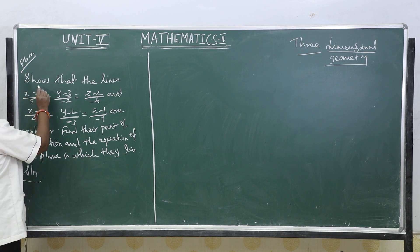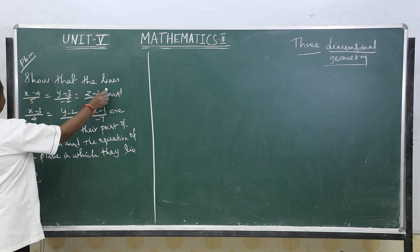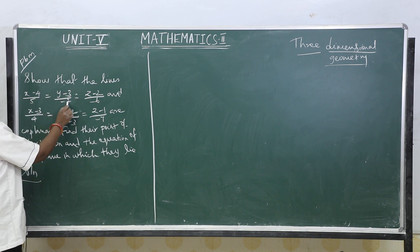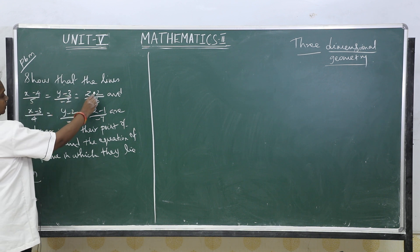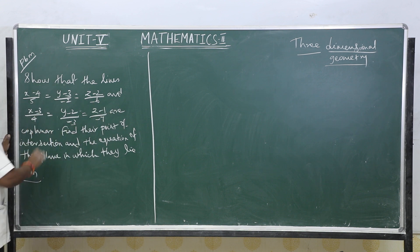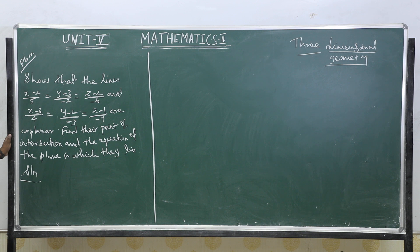The next problem is: show that the lines (x−4)/5 = (y−3)/2 = (z−2)/(−6) and (x−3)/4 = (y−2)/(−3) = (z−1)/(−7) are coplanar. Find their point of intersection and the equation of the plane in which they lie.